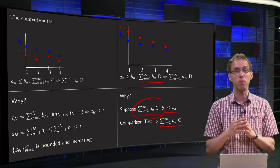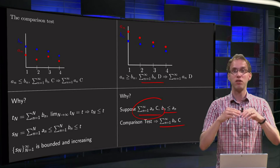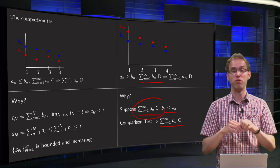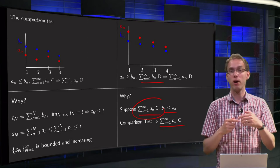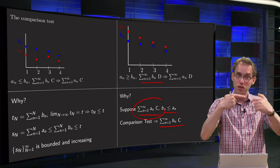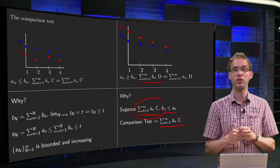So we have in fact two comparison tests. First, given a series, find a series above it which is converging, then you know that your series is converging as well. Or, second option, suppose you have some series, try to find a series below it which is diverging, then you know that your series is diverging as well.